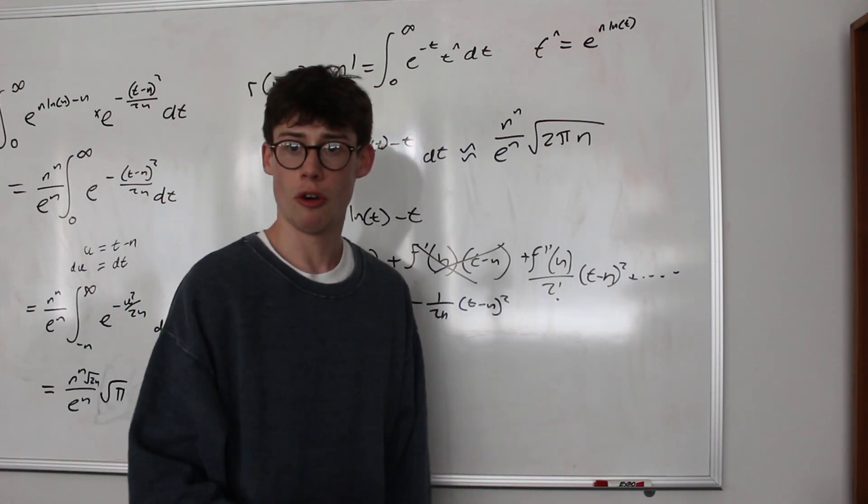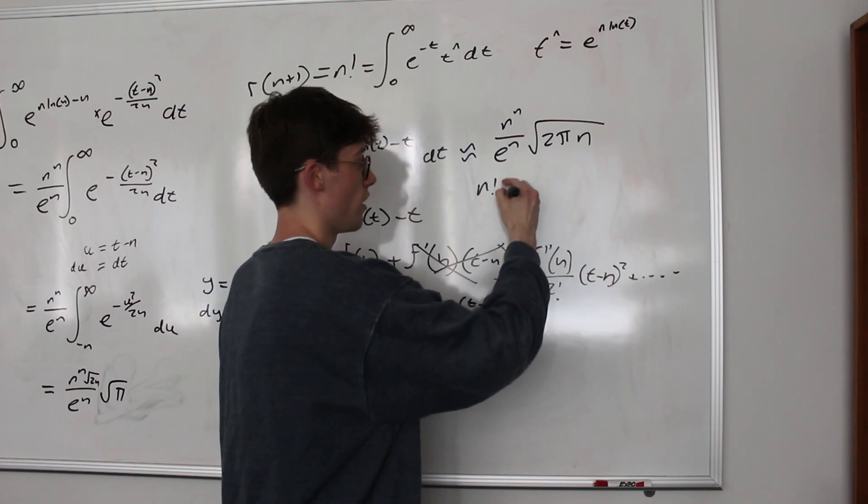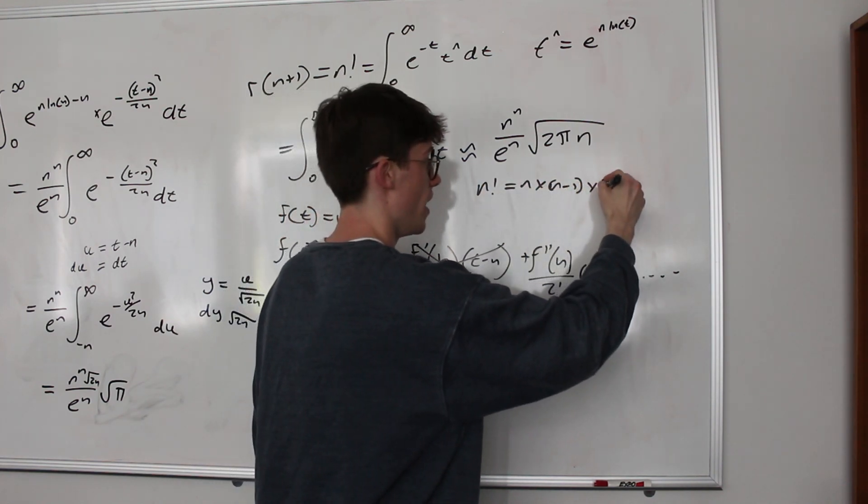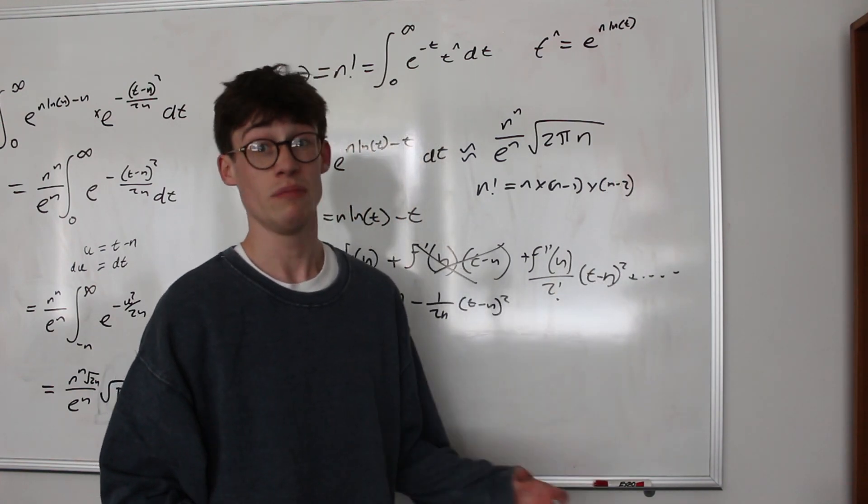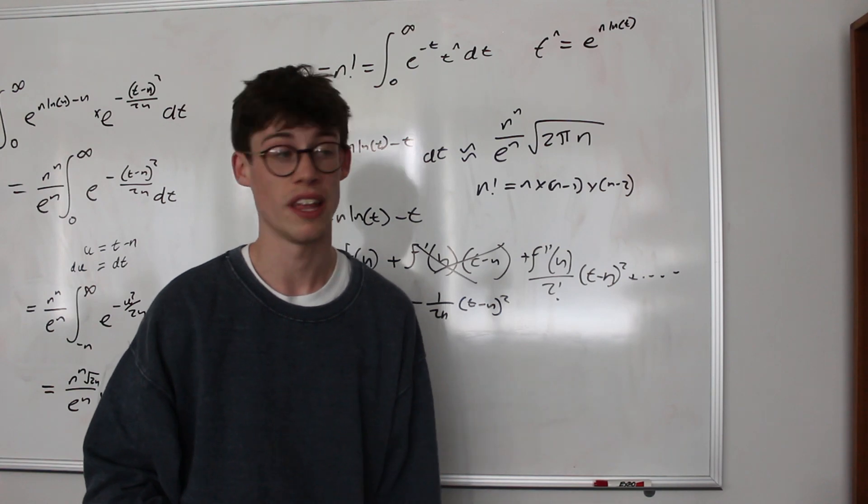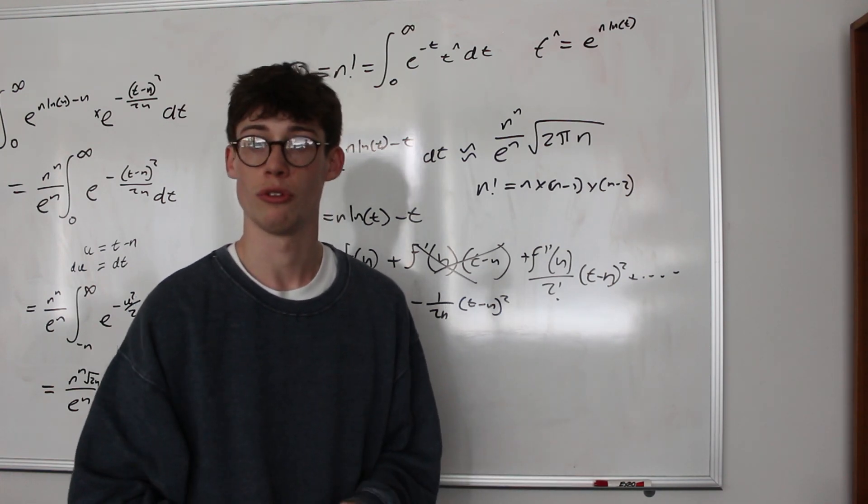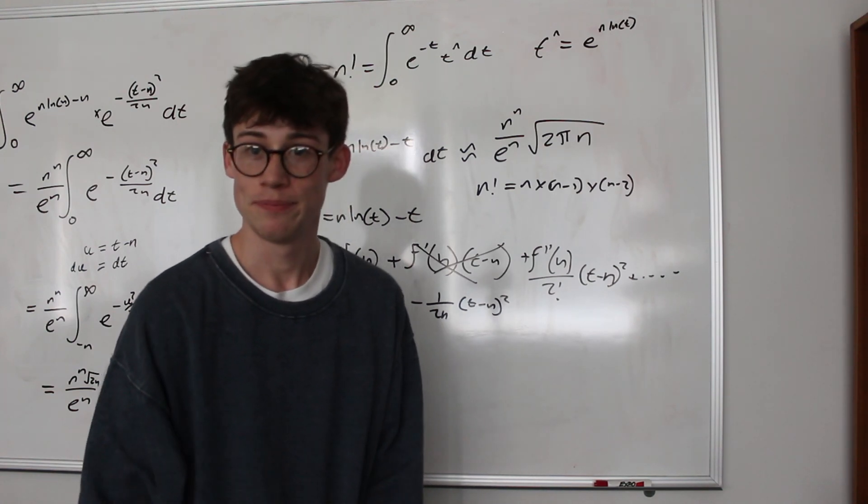I'll leave that as an exercise in the comments, but it does make use of the fact that, well, n factorial is, of course, going to be a product up to n, and how could we turn a product into a sum? There's a particular function you might want to use there, and then how could we use integrals to kind of explore another approximation there? So, thanks for watching everyone, and see you in the next video. Bye.